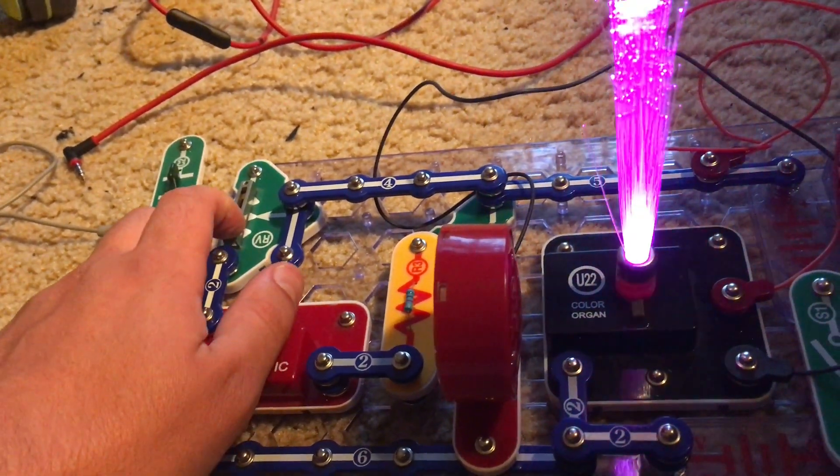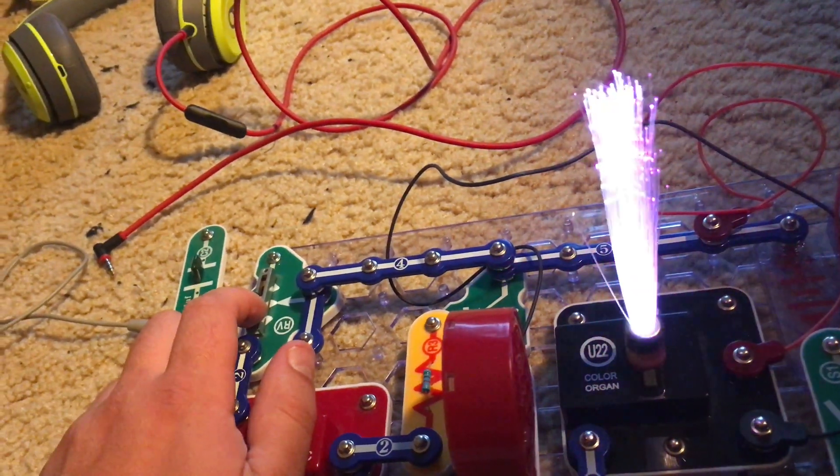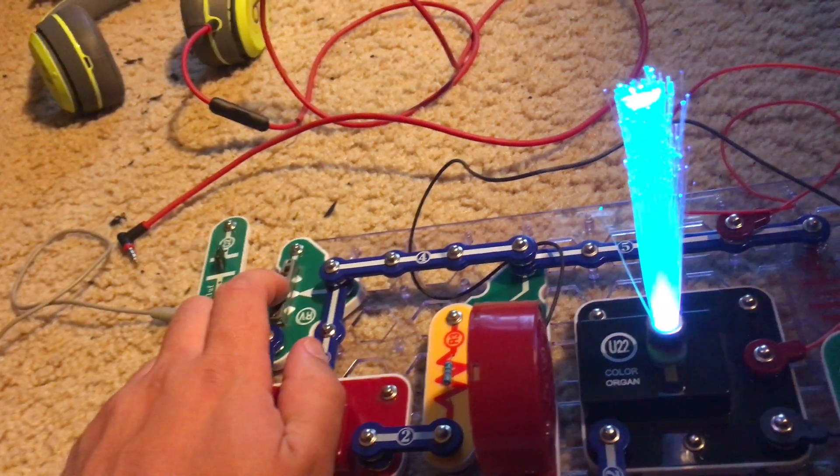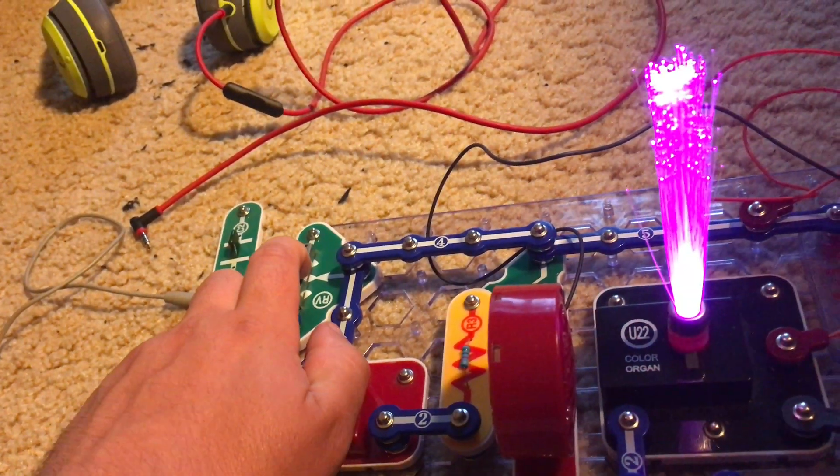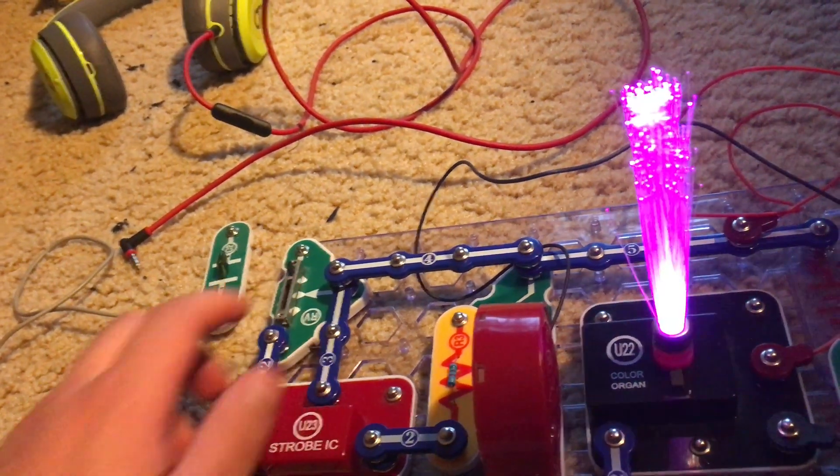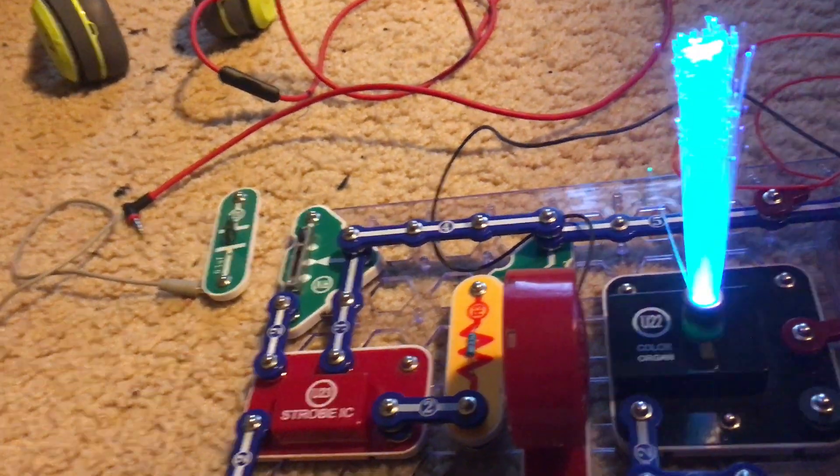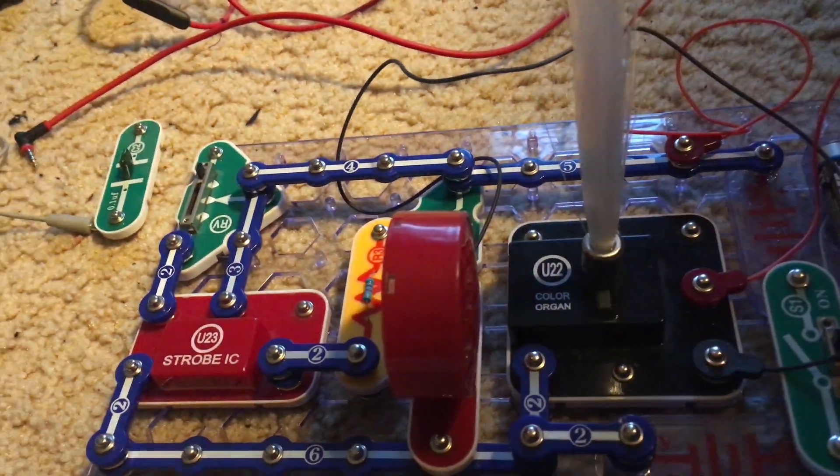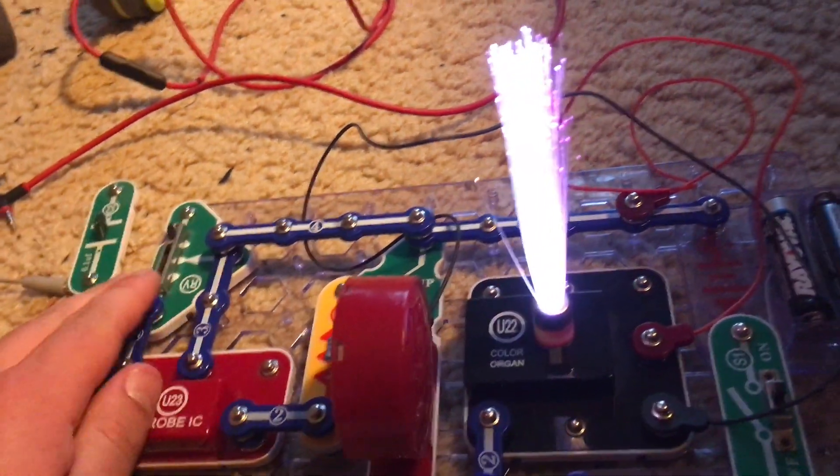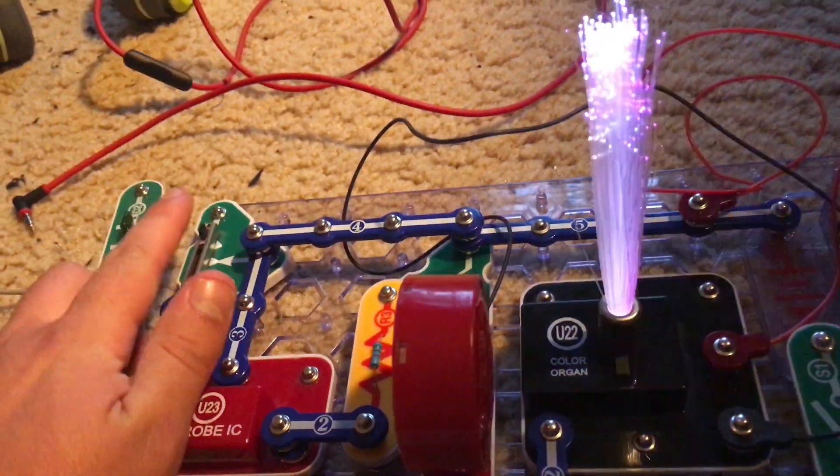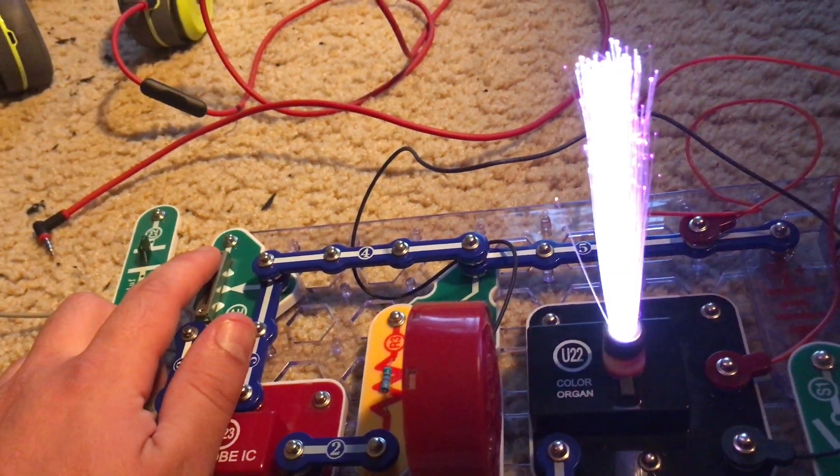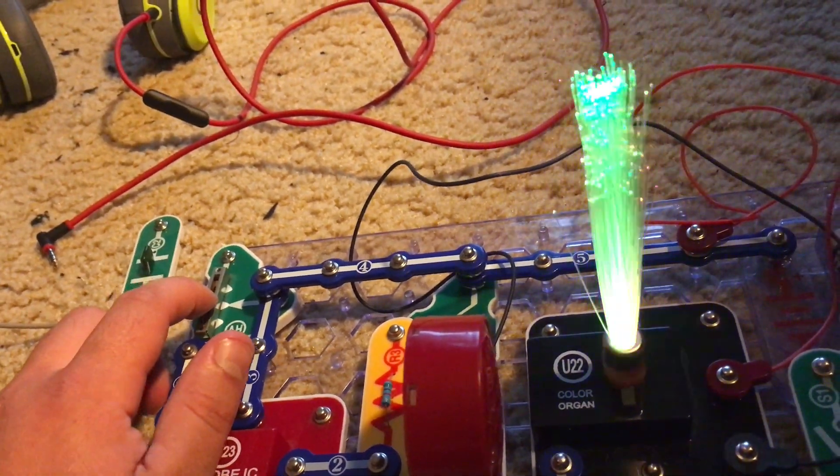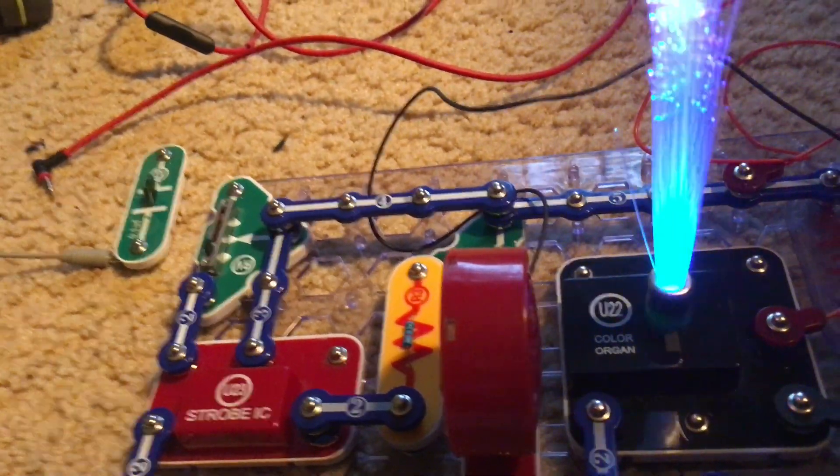Let's slowly move the lever down and the rate at which the color organ changes colors slows, as the sound becomes more low pitched. Now I am going to increase the rate at which the color organ changes color and the volume of the sound. Now it is louder and more high pitched.